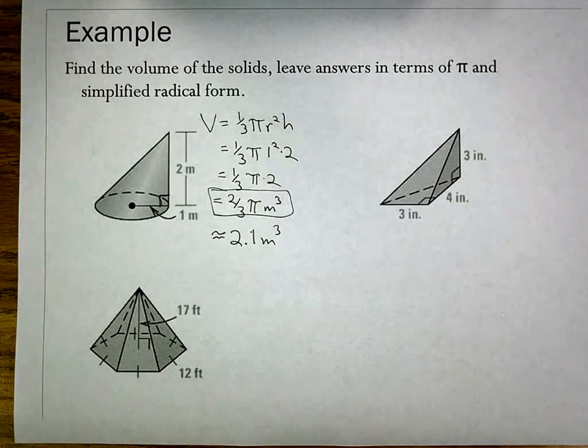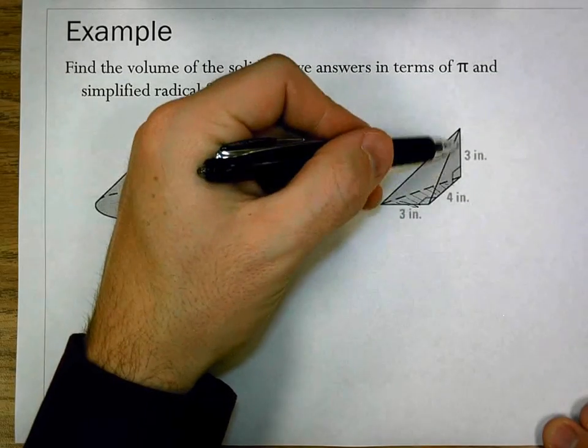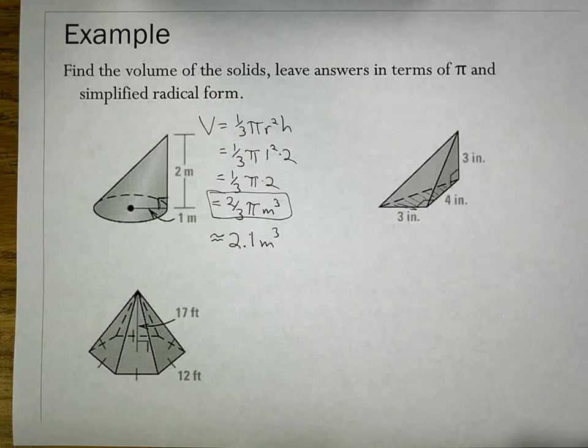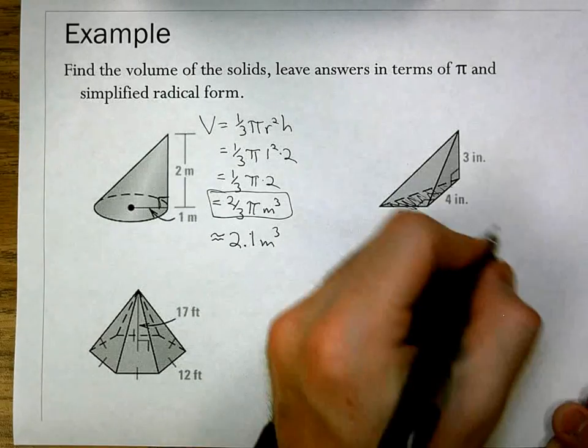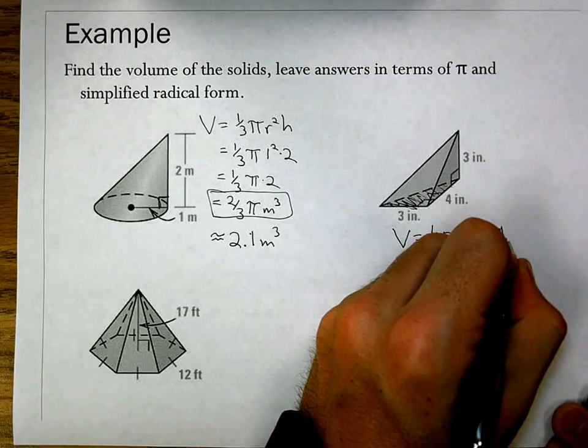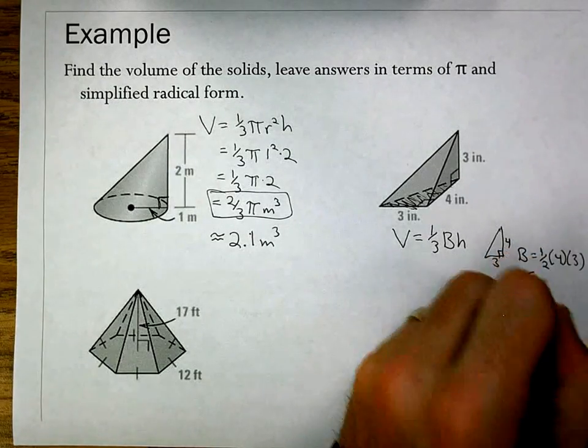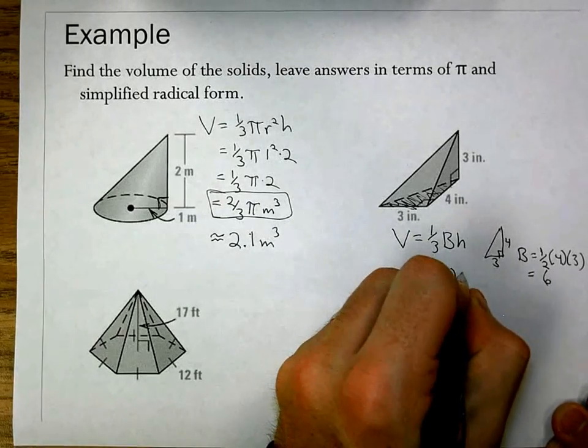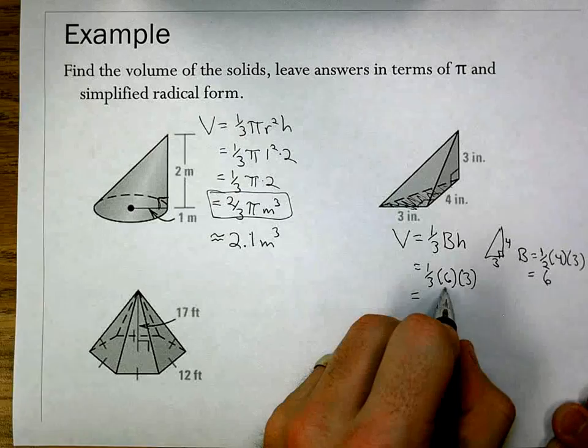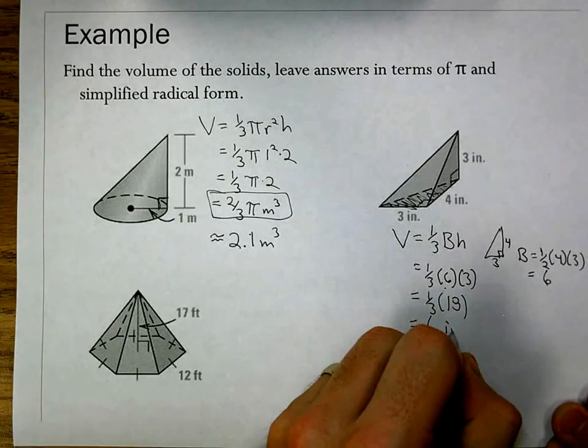Next problem is a pyramid. It is a triangular pyramid. We could technically have either this side as the base or this side as the base, but in either case they'd be the exact same. The volume is one-third the base area times the height. Our base is a triangle, that's 3 by 4. Therefore the base area is one-half times 4 times 3. Half of 4 is 2, so that gives me 6. I have one-third times 6 times 3. I get 6 times 3 is 18 divided by 3. That gives me 6 inches cubed.